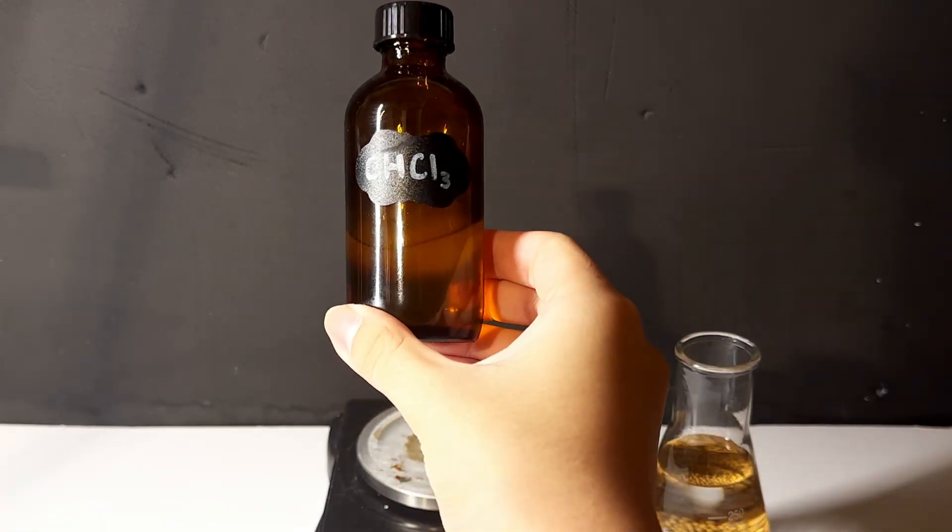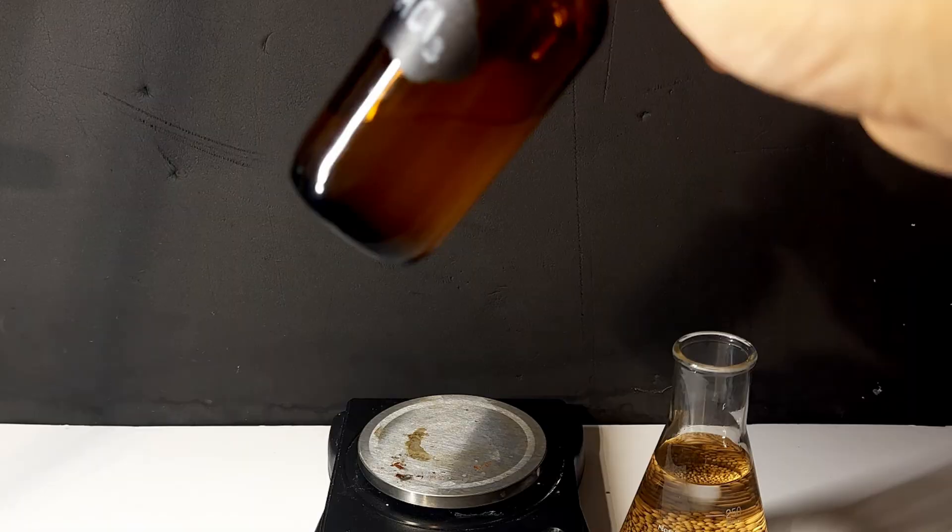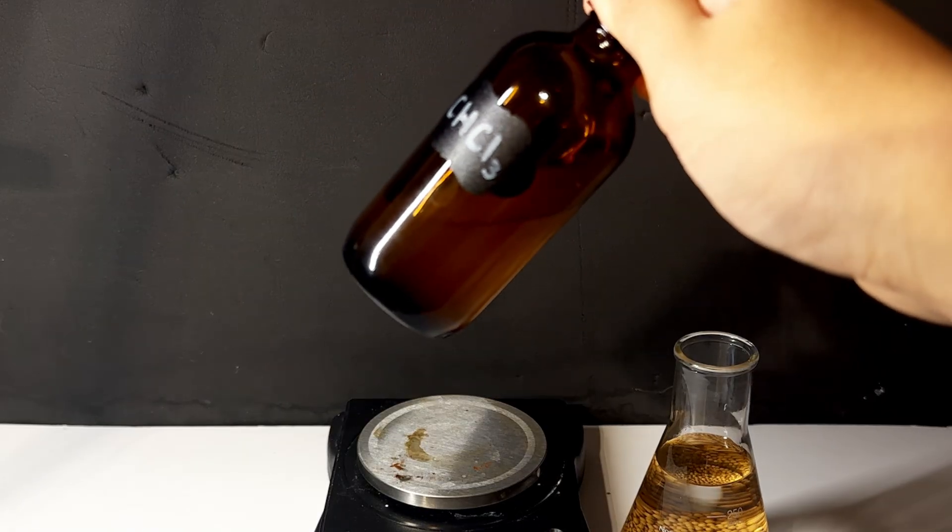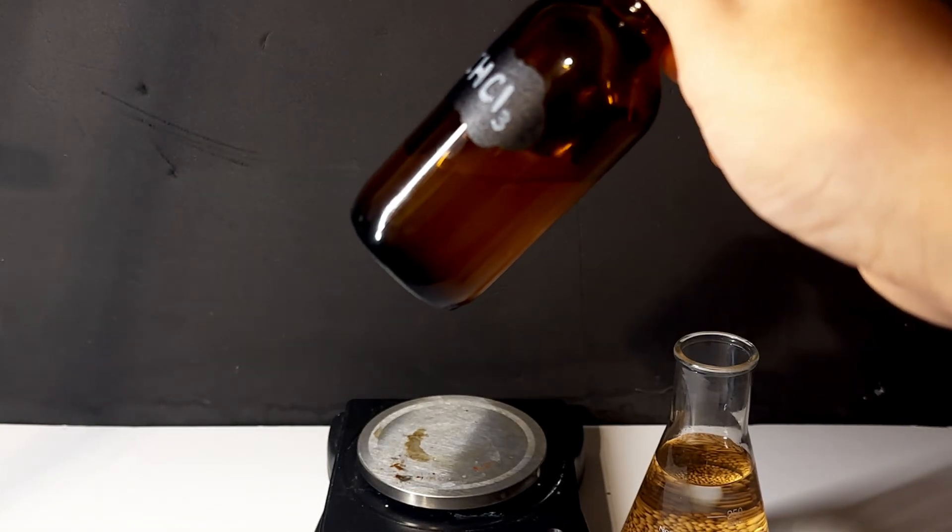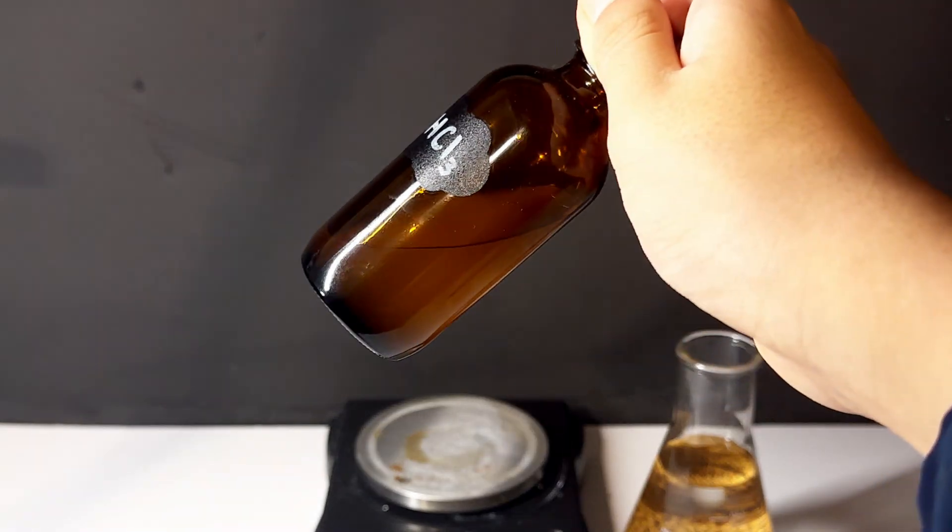As you can see here, when the ethanol is added to the chloroform, it kind of becomes cloudy, but after giving it some time it seems to clear up. This was kind of confusing. Does anyone have an explanation for this? Please let me know.